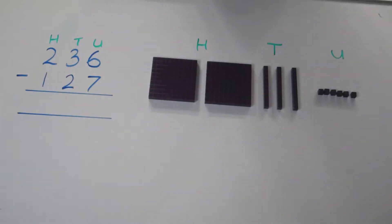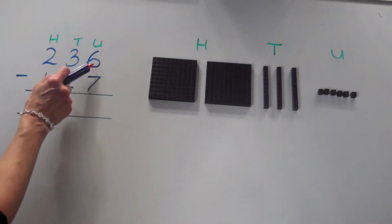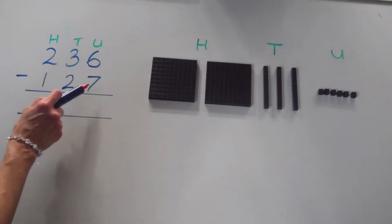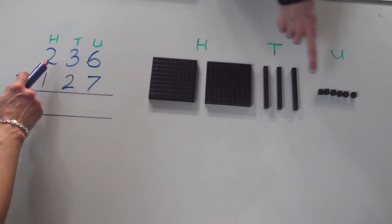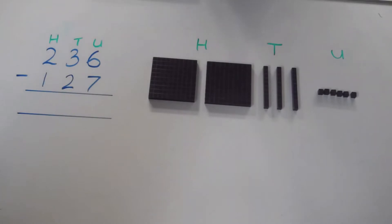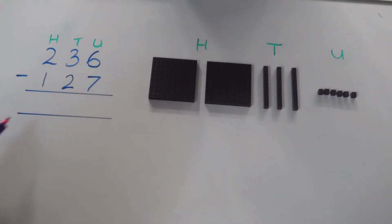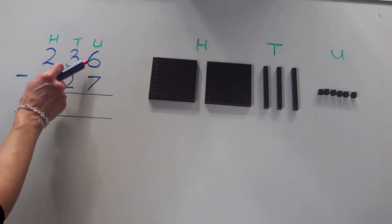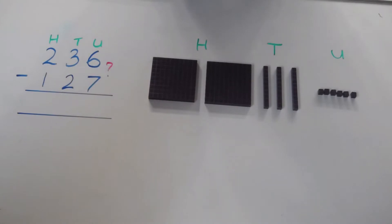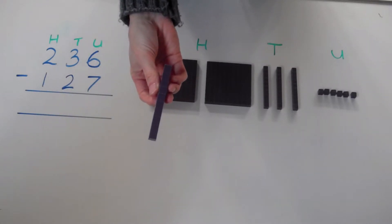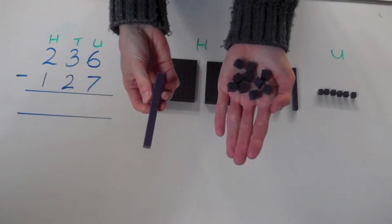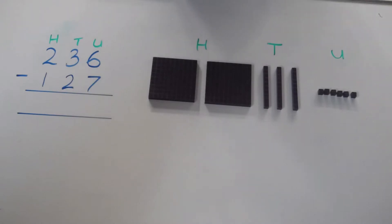Our next calculation is two hundred and thirty-six subtract one hundred and twenty-seven. Starting with the units column, we have six units and we need to take away seven. We can't do that — how can we take away seven from six? We haven't got enough. But let's remember that one ten can be exchanged for ten units — that's going to help us with this calculation.